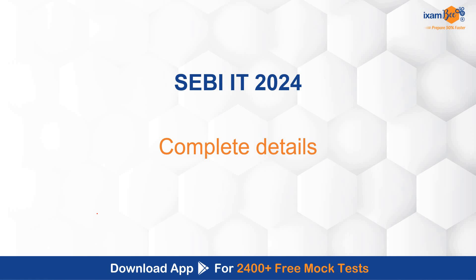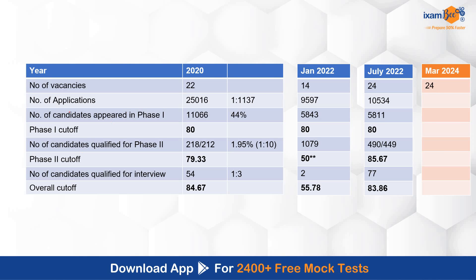First of all, we will look at the previous vacancies and the application numbers for those vacancies. Here we have taken past 3 years data. In 2020, there were 22 vacancies. In January 2022 notification, there were 14 vacancies, and in July 2022, there were 24 vacancies. Looking at the number of applicants: in 2020, 25,000 students applied; in January 2022, 9,500; and in July 2022, 10,000 students applied for this post.